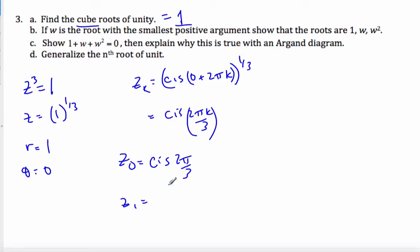And so z0 will be cis 2πk by 3. Z1, plug in 1 here. Well, let me back up there. Z0 will be cis of 0. Z1 will be cis of 2π over 3.